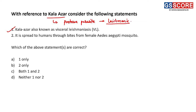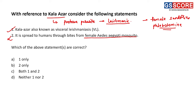Second statement: Kala Azar is spread to humans through bites from the female Aedes aegypti mosquito. This statement is incorrect because Kala Azar is spread through the bite of female sandflies of the family Phlebotominae. The female Aedes aegypti mosquito leads to spread of Dengue, not Kala Azar. That is why the second statement is incorrect and the answer is A, one only.